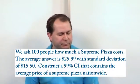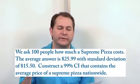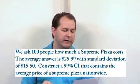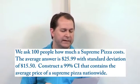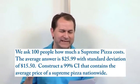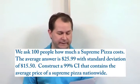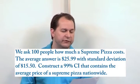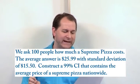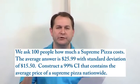For the first problem, it says: we ask 100 people how much a supreme pizza costs in their area. The average answer is $25.99 with a standard deviation of $15.50. Construct a 99% confidence interval that contains the average price of a supreme pizza nationwide.